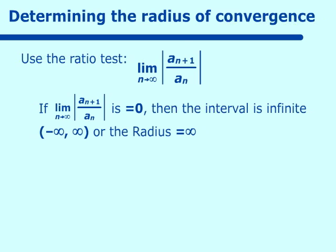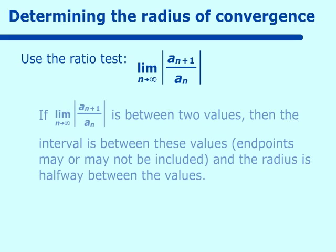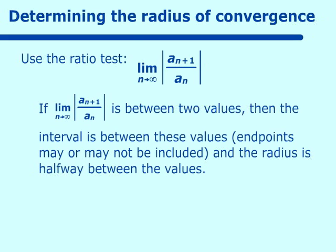The radius of convergence is also infinite. If the limit is between two finite values, then the interval is between those two values and we must check the endpoints. The radius is halfway between these values.